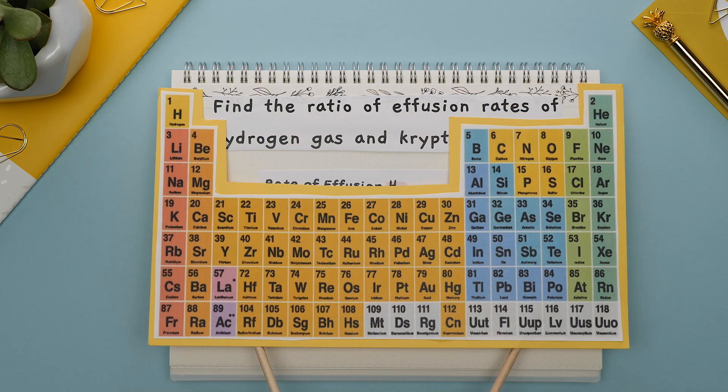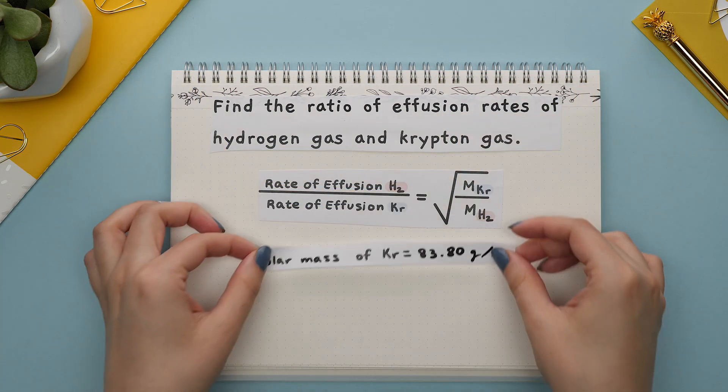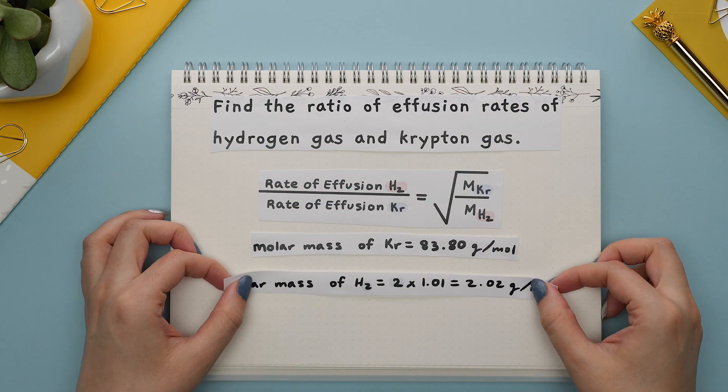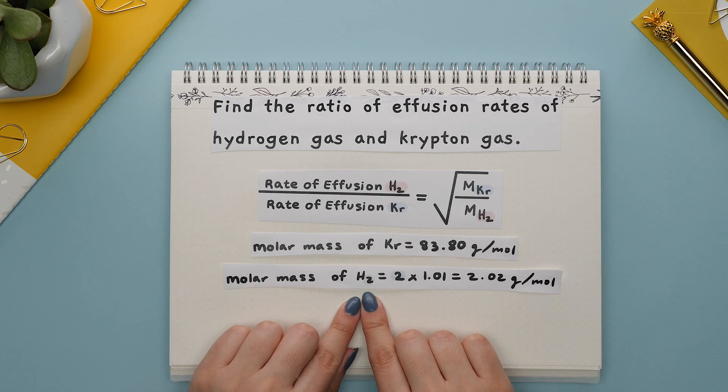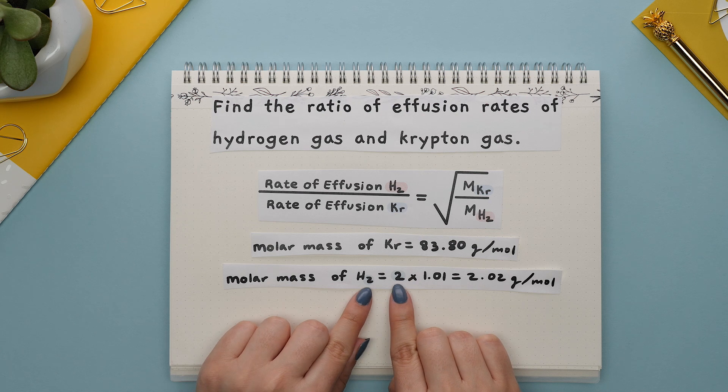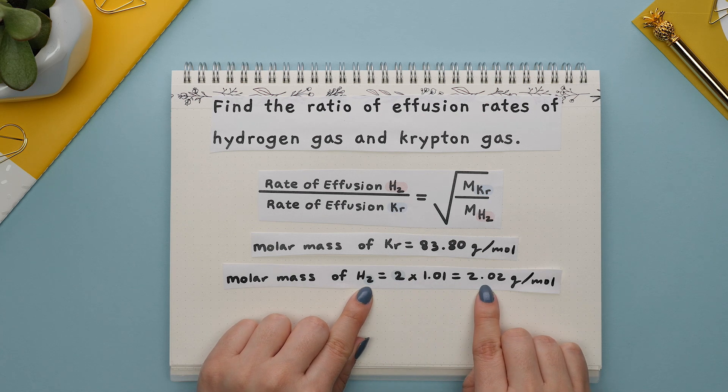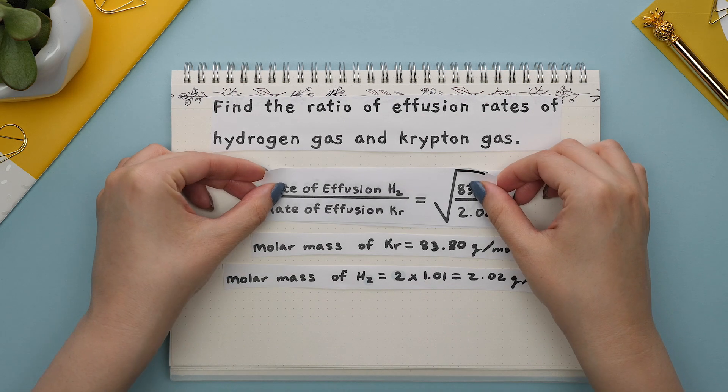We can use the periodic table to find the molar mass of krypton which is this. Next we will calculate the molar mass of H2 by multiplying the individual mass of hydrogen and multiplying this by two since there are two hydrogens. This gives us 2.02.